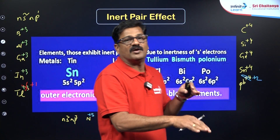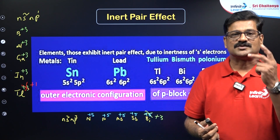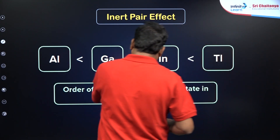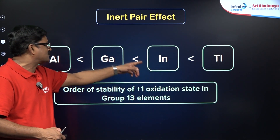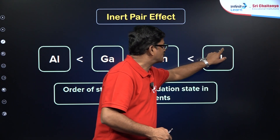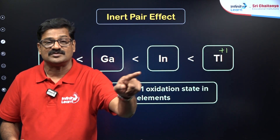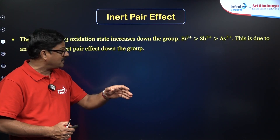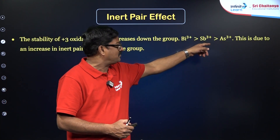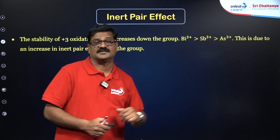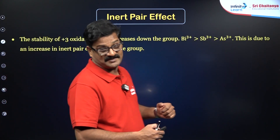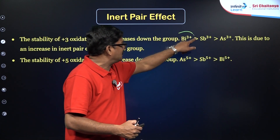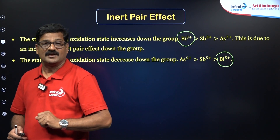The last element in each P-block group — groups 13, 14, and 15 — shows an oxidation number 2 less than expected. The order of stability of the +1 oxidation state is: thallium > indium > gallium > aluminium; thallium's +1 oxidation state is most stable due to the inert pair effect. The stability of the +3 oxidation state increases down group 15: bismuth +3 is more stable than antimony +3, which is more stable than arsenic +3. Conversely, the stability of the +5 oxidation state decreases down the group — so bismuth +3 is more stable, and bismuth +5 is less stable.